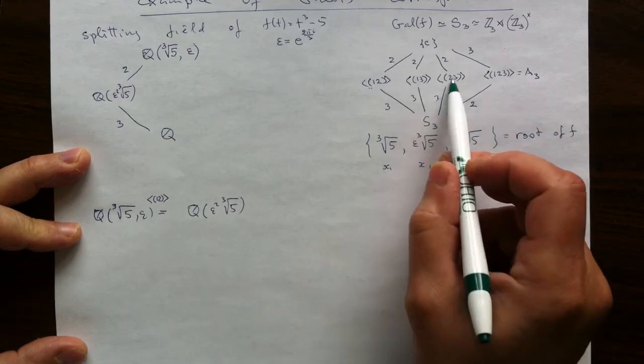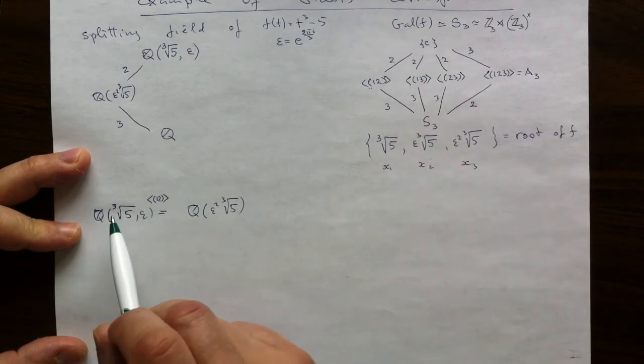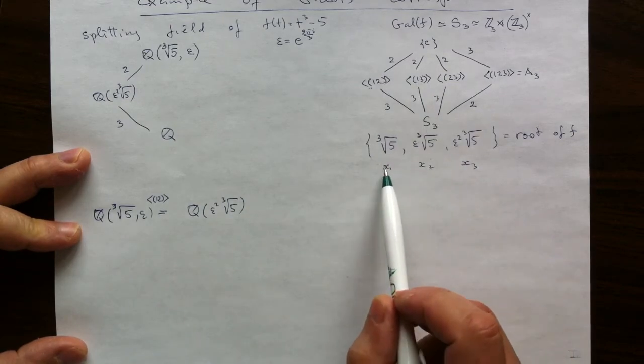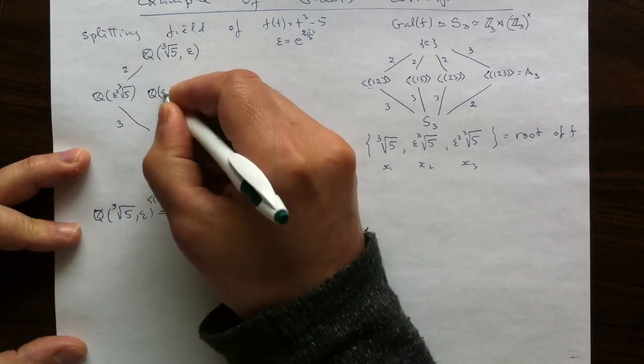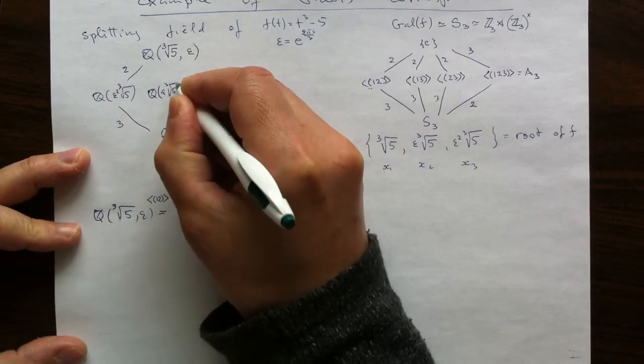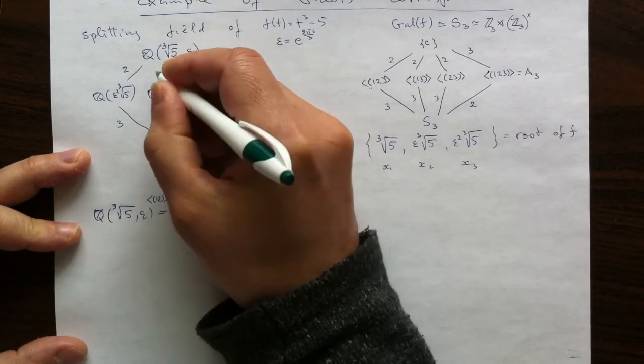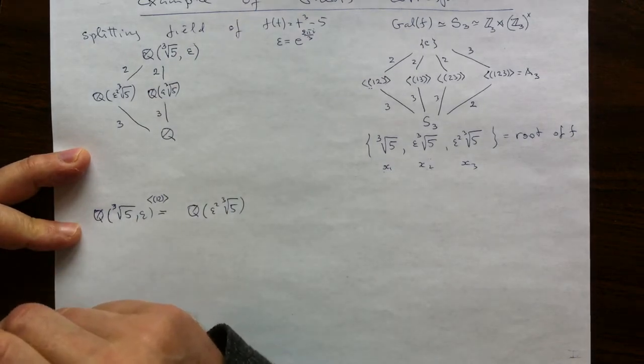And then the two subfields corresponding to the subgroups (1,3) and (2,3) are similarly things which are fixed. Say for the transposition (1,3), x2 is fixed, and that is the number which we can use as a generator for the subfield, extension of degree 3 of rationals and of index 2 inside the splitting fields.